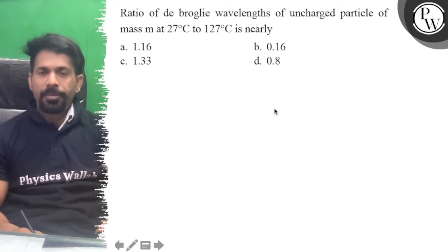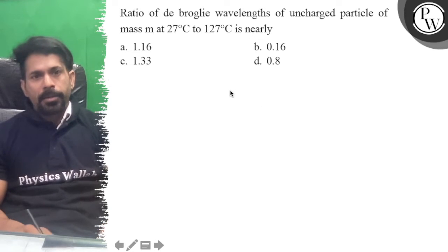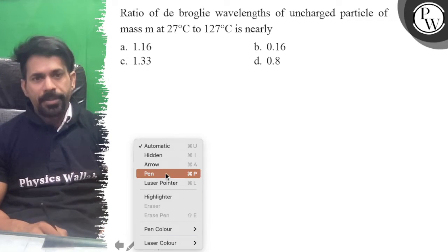Let us see the question: the ratio of the de Broglie wavelength of the uncharged particle at 27 and 127 degree Celsius.